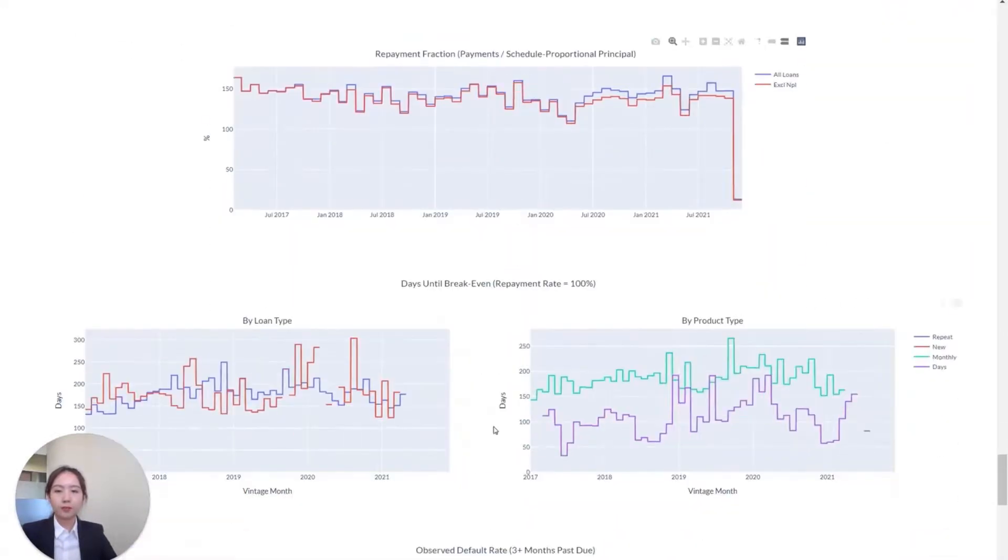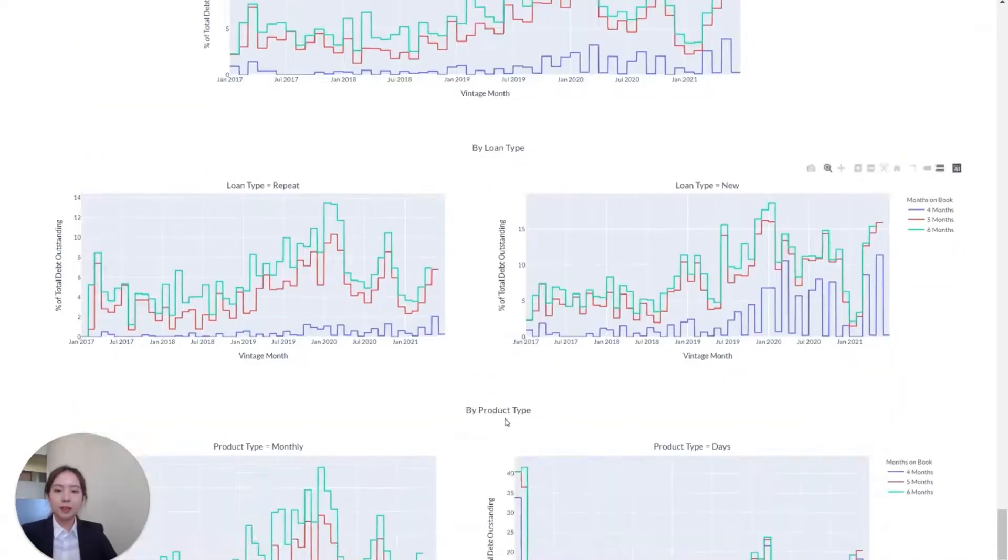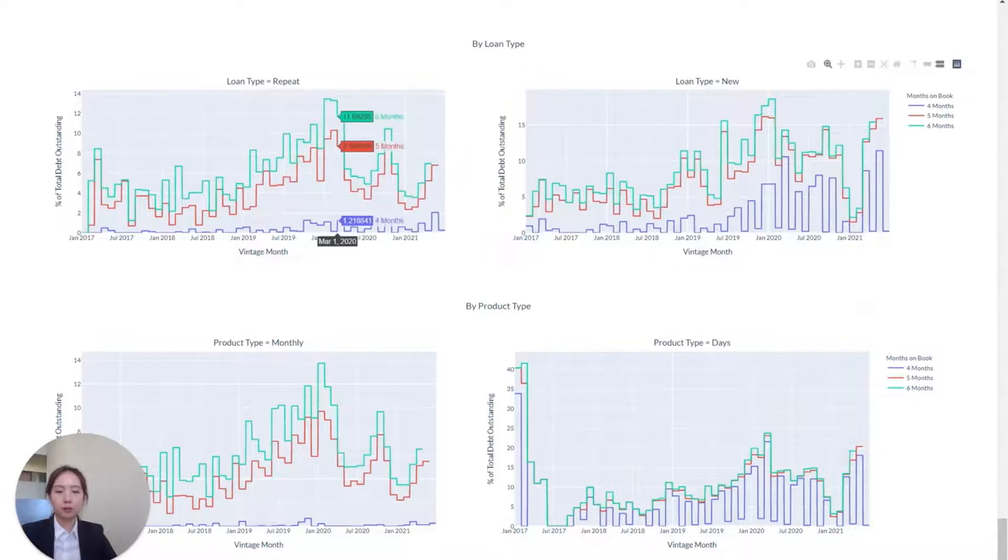We have the days till break even, the observed default rates. And the last few graphs tell you about how much is still outstanding after a few months on the book.